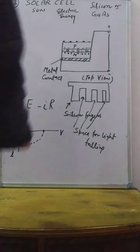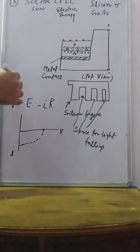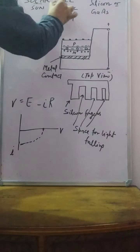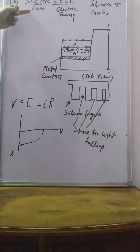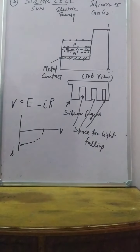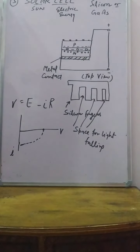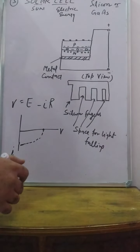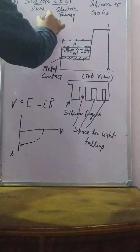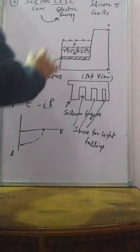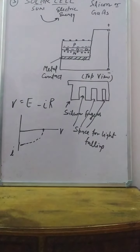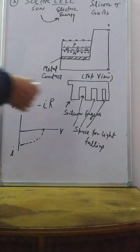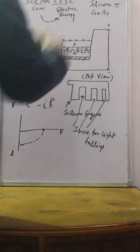Solar cell. This is the third application of the photodiode. Solar means sun, cell means electric energy. This particular solar cell is used to convert sun energy into electric energy, used for domestic or industrial purposes. The particular p-n junction diode used is silicon or gallium arsenide.